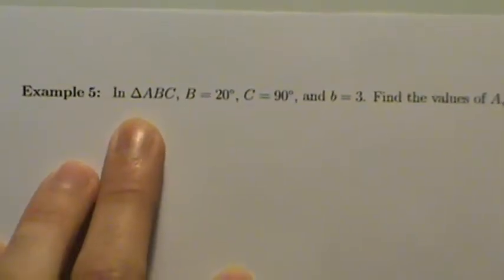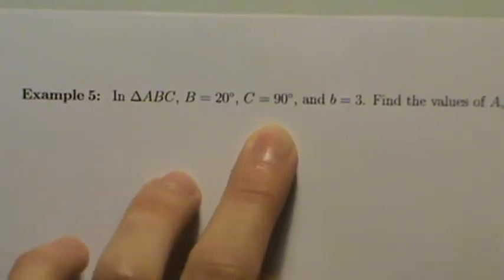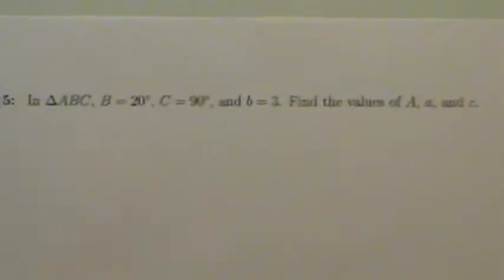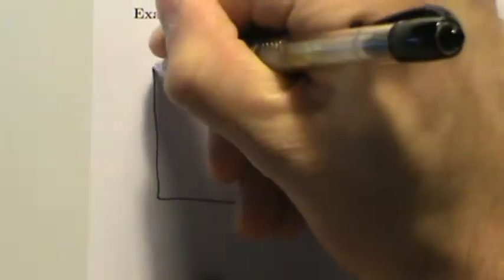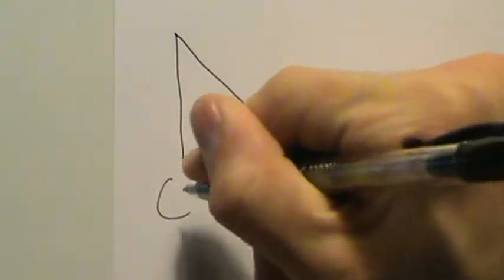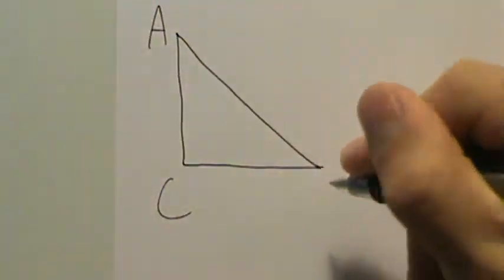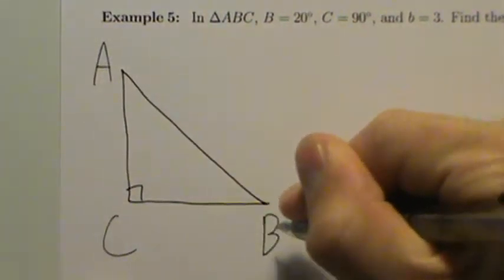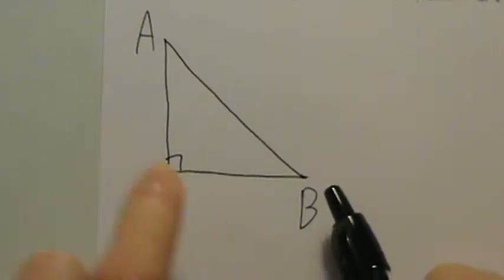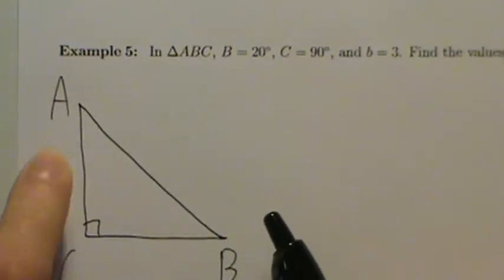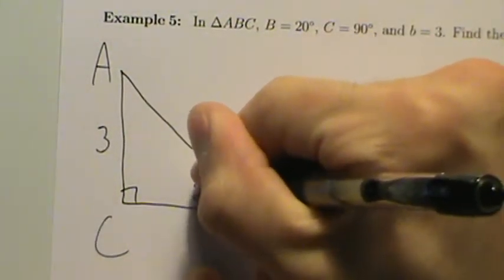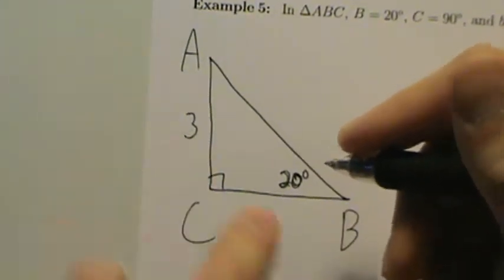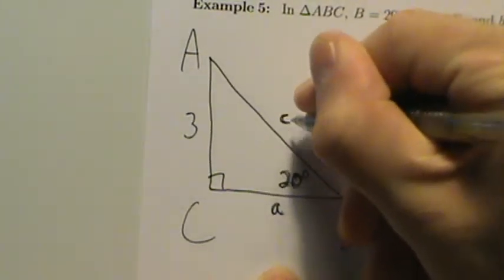Example 5: In triangle ABC, angle B is 20 degrees, angle C is 90 degrees, and little b is 3. Find the values of big A, little a, and little c. The custom here is to have capital letters as the names of the angles, and the side opposite each angle is the corresponding lowercase letter. C is our 90-degree angle, so little b — the side opposite angle B — equals 3, and we need to find capital A, lowercase a, and lowercase c, which is the hypotenuse.